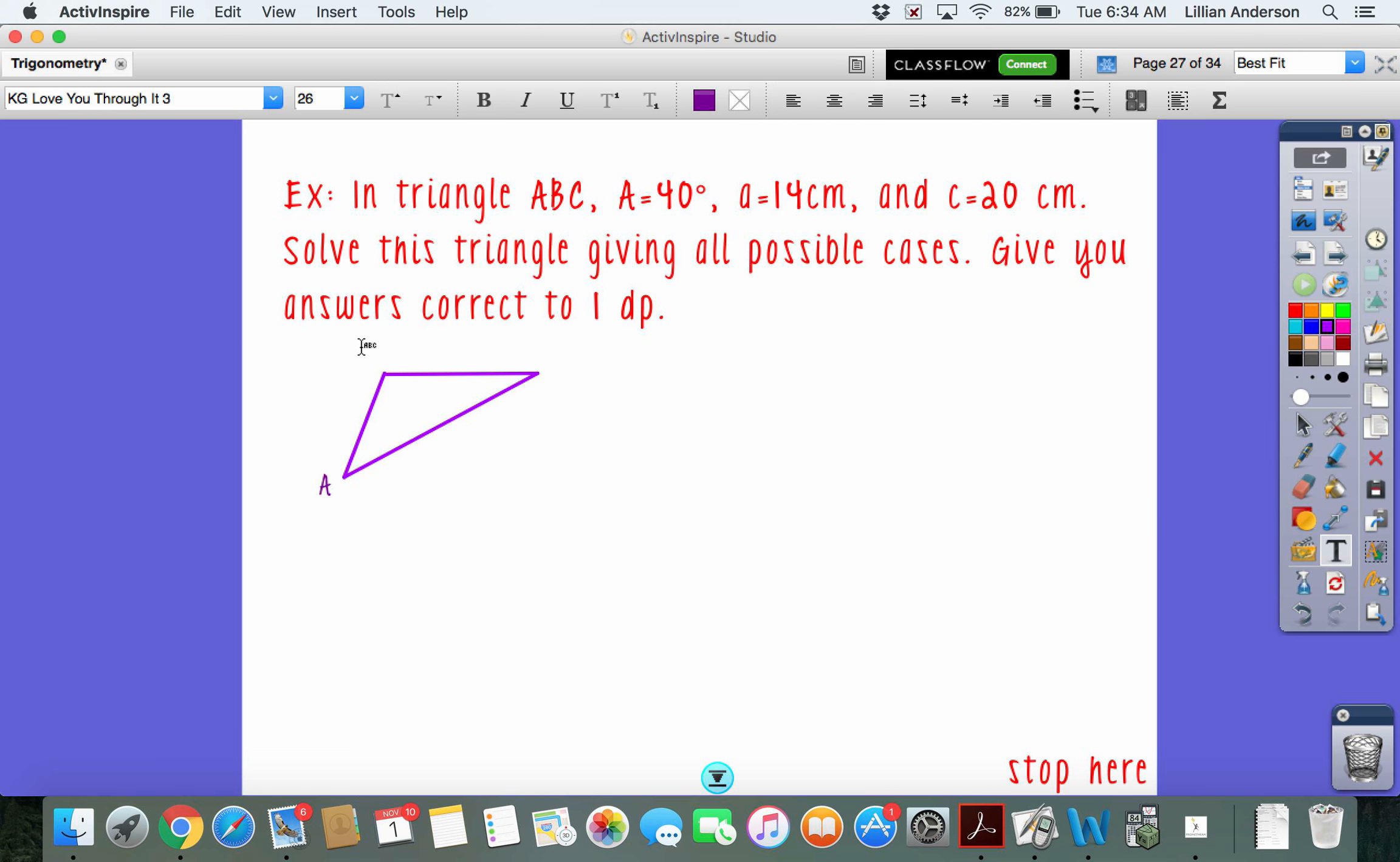So we have angle A. I know A is 40 degrees. Side a is 14. And side c is 20. And as you can see, this is a situation of side-side angle. And so, even when you see something like this, you might want to check for ambiguous case. So, basically, we're going to solve this triangle, giving all possible cases, give answers correct to one decimal place. And so, which clearly you're going to see that angle C is going to be the easiest to solve for. So, we're going to set it up.